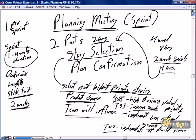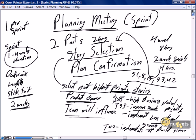So we spend two hours doing story selection in hand with the product owner. At that point we typically tell the product owner they may be excused — it's not mandatory they leave, but the next step is plan confirmation. We have selected stories 1, 8, 15, 33, and 42. On first blush, we think all of those will fit within our ability to deliver for a sprint. In the second two hours, the team confirms the expected effort for each story and gains commitment that they will be able to complete all of these stories.